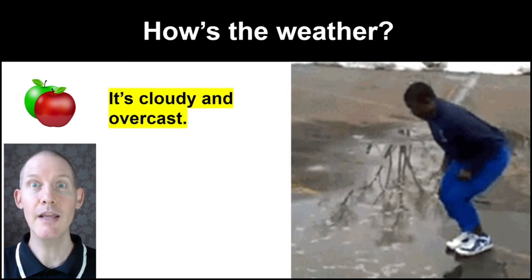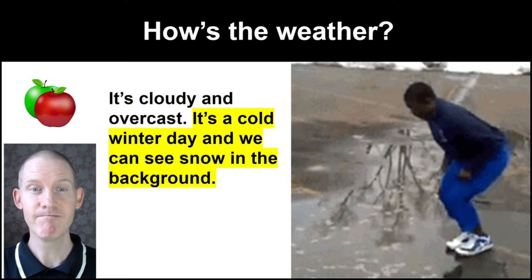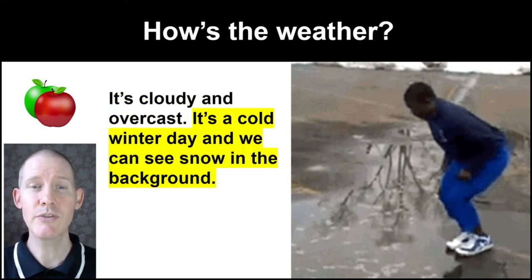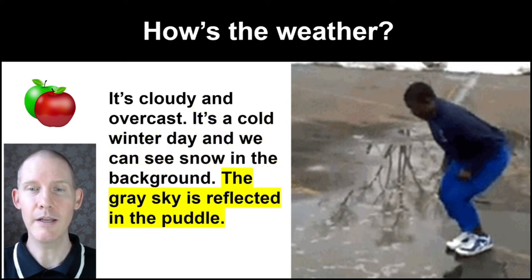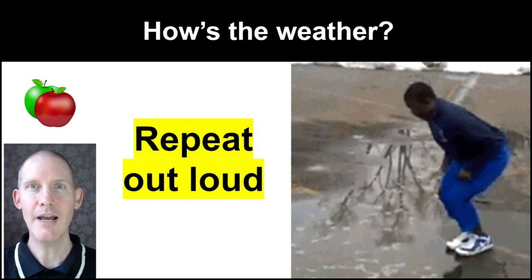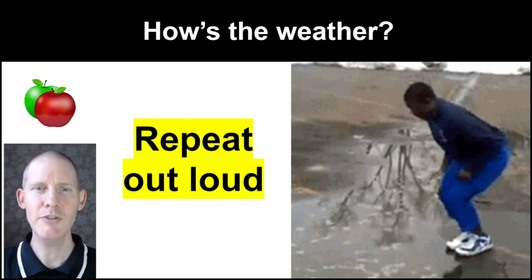It's cloudy and overcast. It's a cold winter day and we can see snow in the background. The gray sky is reflected in the puddle. Hey, repeat out loud — let's do pronunciation.